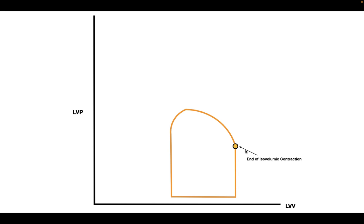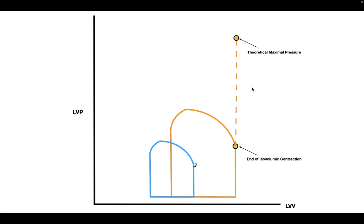Now imagine if we were to close the aortic valve and keep it from opening. The heart would continue to undergo isovolumic contraction until it reached a theoretical maximal pressure — that is, the heart contracts until it can't contract anymore. If we do this for a number of different loops, we get several different maximal pressure points.